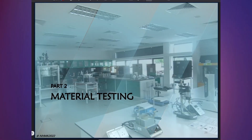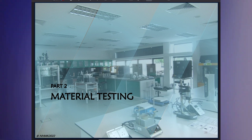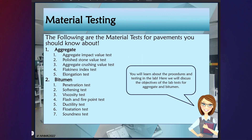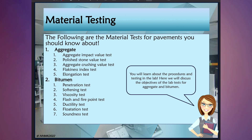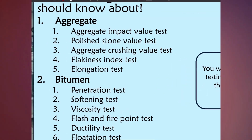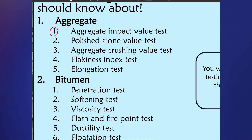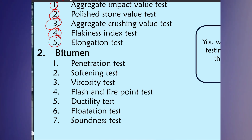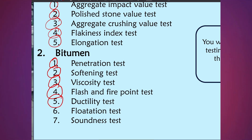Now we are going to the second part of our chapter, which is material testing. The materials testing we will discuss briefly covers firstly aggregates and secondly bitumen. For aggregates: the aggregate impact value test, the polished stone value test, the aggregate crushing value test, the flakiness index, and the elongation test (also known as shape test). For bitumen: the penetration and softening test, the viscosity test, flash and fire point test, the ductility test, flotation test, and soundness test.